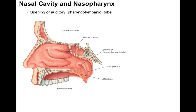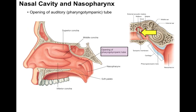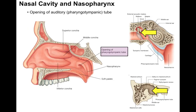The nasopharynx has the opening of the auditory tube, also known as the pharyngotympanic tube or the eustachian tube — all three are synonymous. In this sagittal section, there's the opening of the pharyngotympanic tube. It's called the pharyngotympanic tube because it connects the nasopharynx to the middle ear, where auditory function occurs, hence the name. Notice the communication from the nasopharynx through this tube into the middle ear, and from there through openings called the aditus to the mastoid antrum and then to the mastoid air cells.